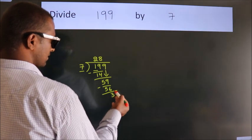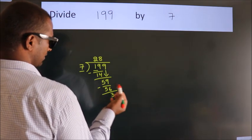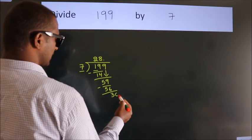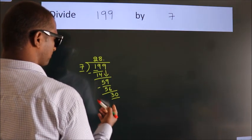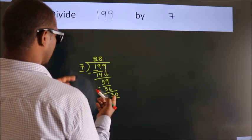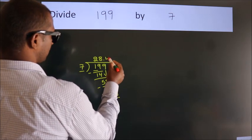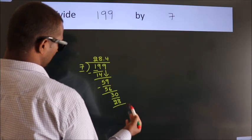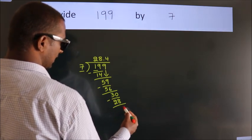After this, no more numbers to bring it down. So what we do is, we put dot take 0. So 30. A number close to 30 in 7 table is 7 fours, 28. Now we subtract. We get 2.